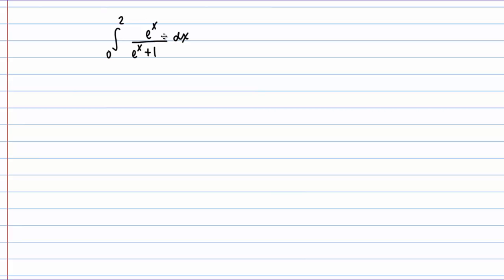Let's look at another integral — this time a definite integral. I have the definite integral from 0 to 2 of E to the X over the quantity (E to the X plus 1) DX. This is a more complex integral, so let's try U-substitution. I'll let U equal what's in the denominator: E to the X plus 1. Then DU equals E to the X DX, which is what I see in the numerator — so this works nicely. For a definite integral U-substitution, we must also transform the bounds of integration.